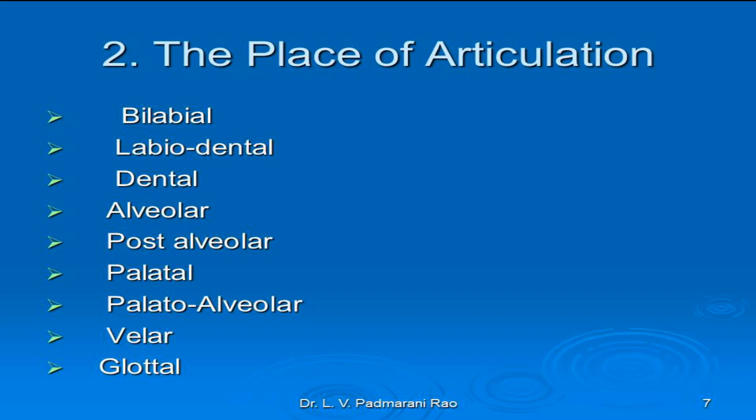Accordingly we have different types of places of articulation. Number one is bilabial: as the name suggests, both lips are involved in the production of the sound. Some sounds are produced by two lips and they are either voiced or voiceless. Their examples are the initial sounds in 'pat', 'bat', 'mat', and 'was', with representative symbols P, B, M, and W respectively.